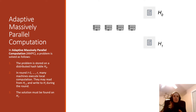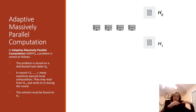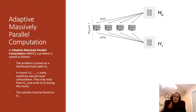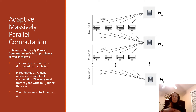In AMPC, we start with the input stored on a distributed hash table H₀ — a large data structure with parallel access. AMPC procedures execute in rounds: in each round, you're allowed to read from the previous distributed hash table and write to the next one. This is different from sending messages between machines, since all machines read from the same table and write to the next. In the final distributed hash table, we output our solution.